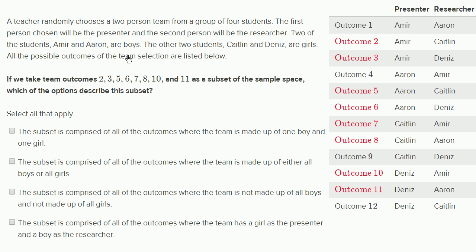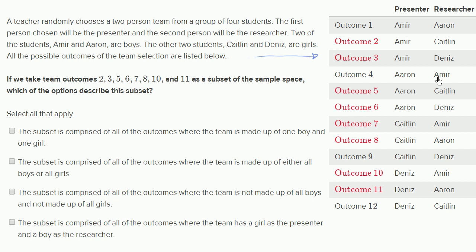All the possible outcomes of the team selection are listed below. You can see all of the possible outcomes. For the presenter, here are three outcomes where Amir is the presenter, and then in each of those three, you essentially have each of the other three people being a potential researcher — Aaron, Caitlin, or Denise.